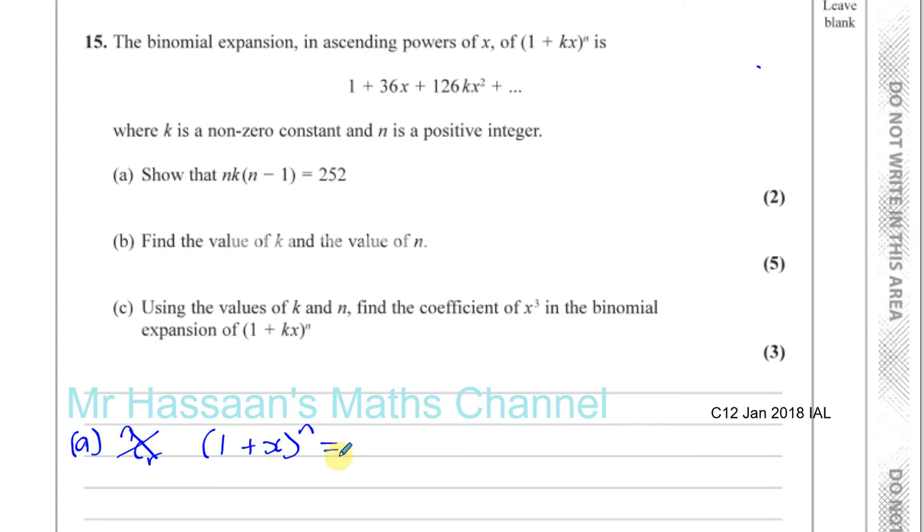Okay, where if you have a 1 here, which we do, which will make life easier, then the expansion of 1 plus x to the power of n will be given by 1 plus n times x, where x is whatever term is in this place and n is the power, plus n times n minus 1 over 2 factorial times that, whatever that's in that place, x squared.